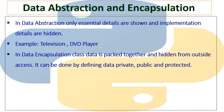In Data Encapsulation or Data Hiding, the class data is packed together and hidden from outside access. Though we are declaring a class, we can access data of that class outside the class by using the class name or the object name. But in Data Encapsulation, we can put control on this so that data cannot be accessed outside the class. This can be done by defining data as private, public, and protected. Public and protected data can be easily accessed outside the class, whereas private data cannot.